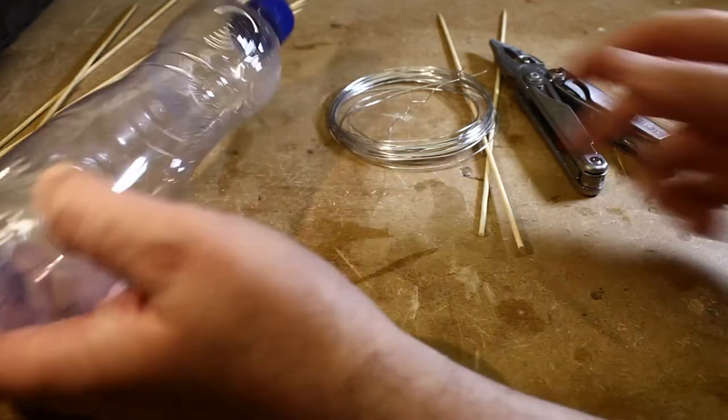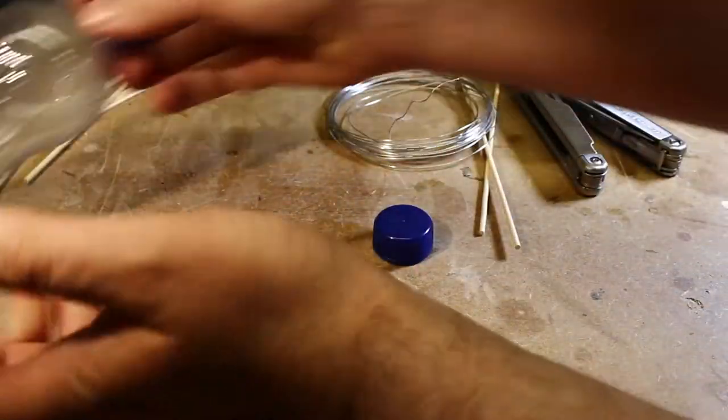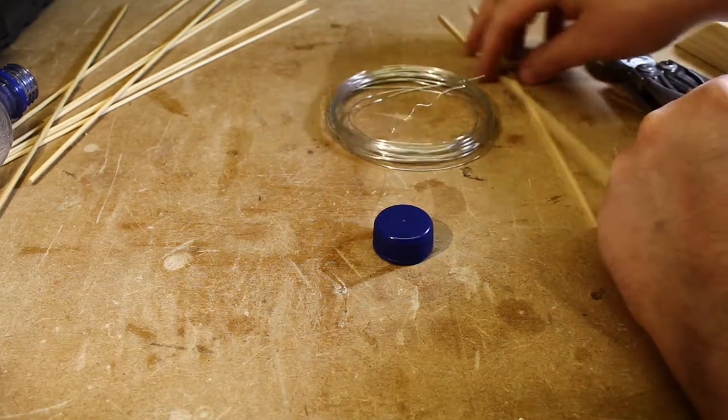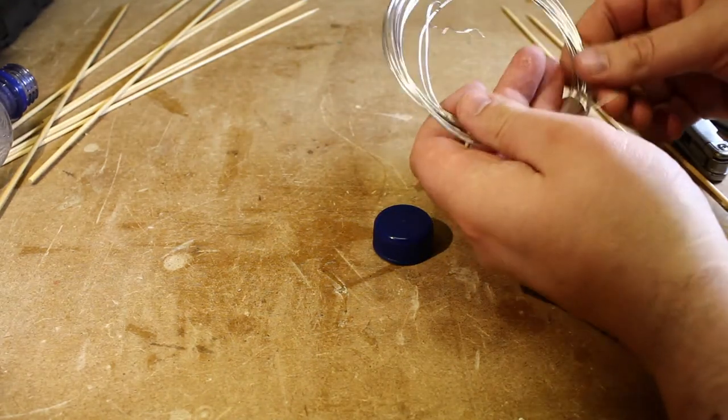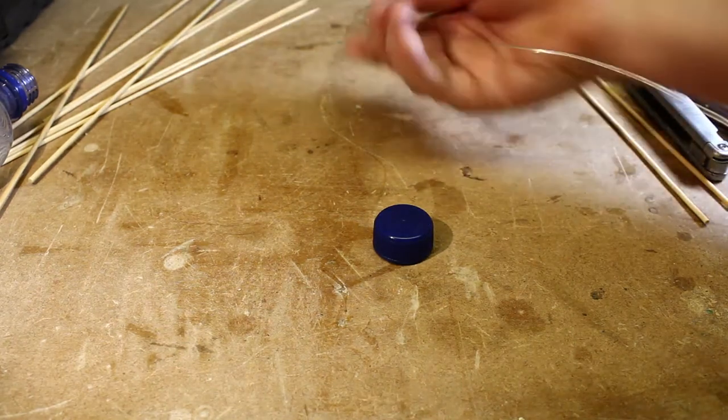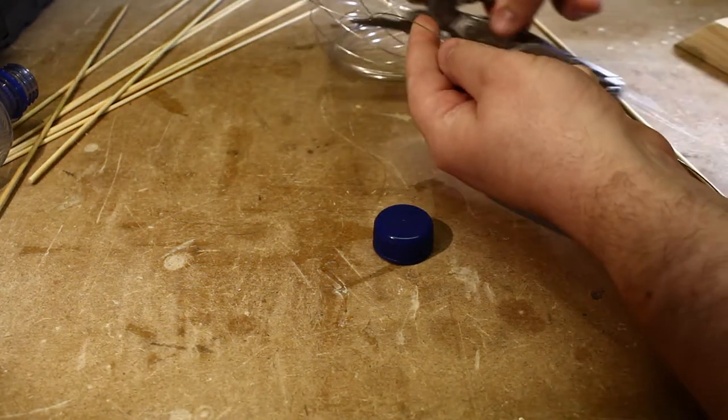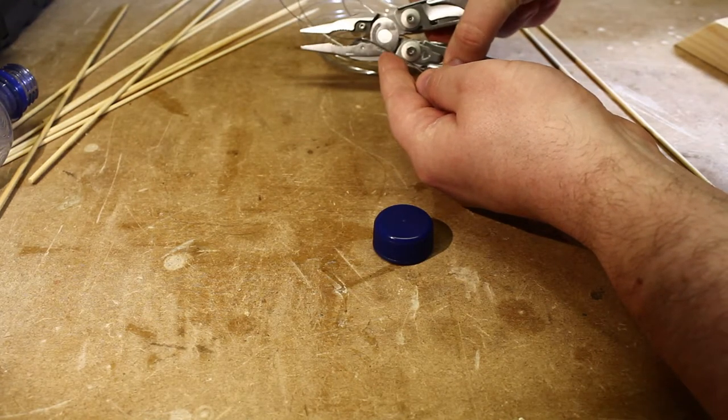The first thing you need to do is get your bottle cap and a piece of wire. Whatever length you want is fine. Just make sure you have enough so that you can hang it from something high.